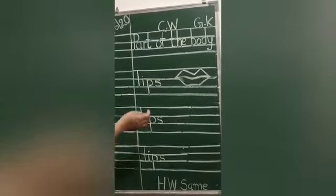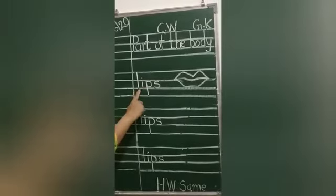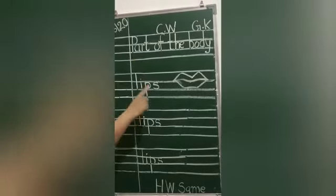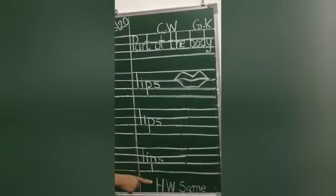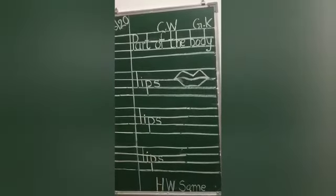So, you have to write down the spelling. L-I-P-S. Lips. CW, one page. And HW, one page.